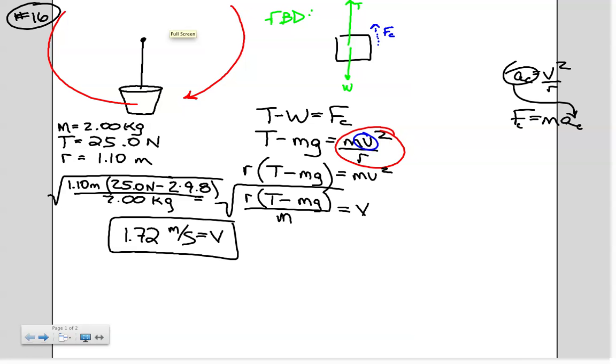So we can say that at the bottom of the path of the vertical circle that the bucket is making, the speed of the bucket is 1.72 meters per second.